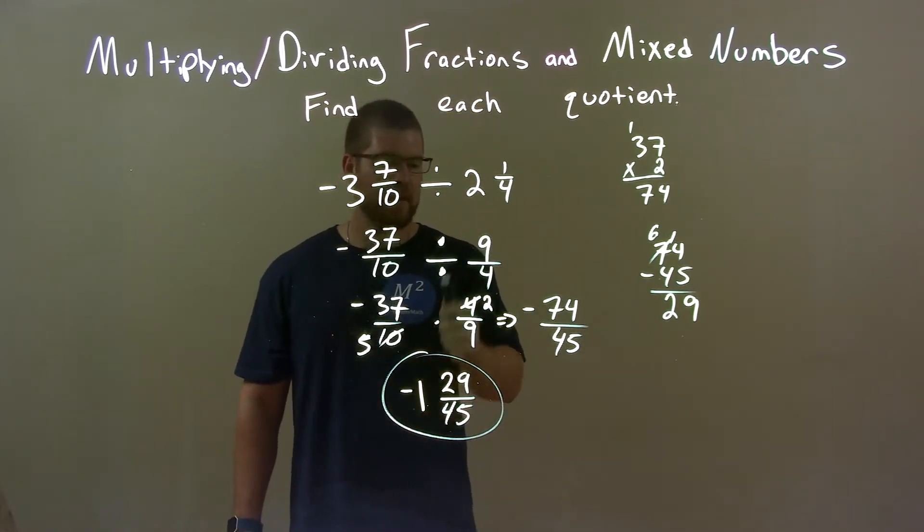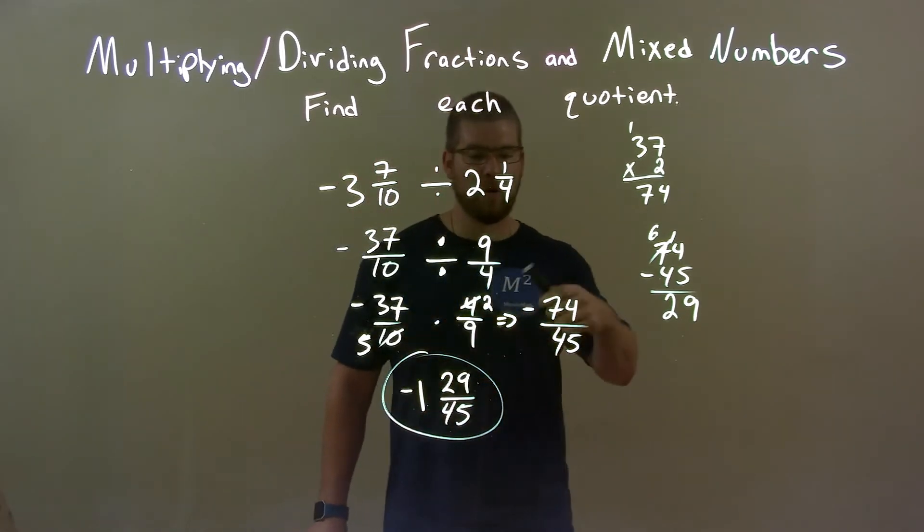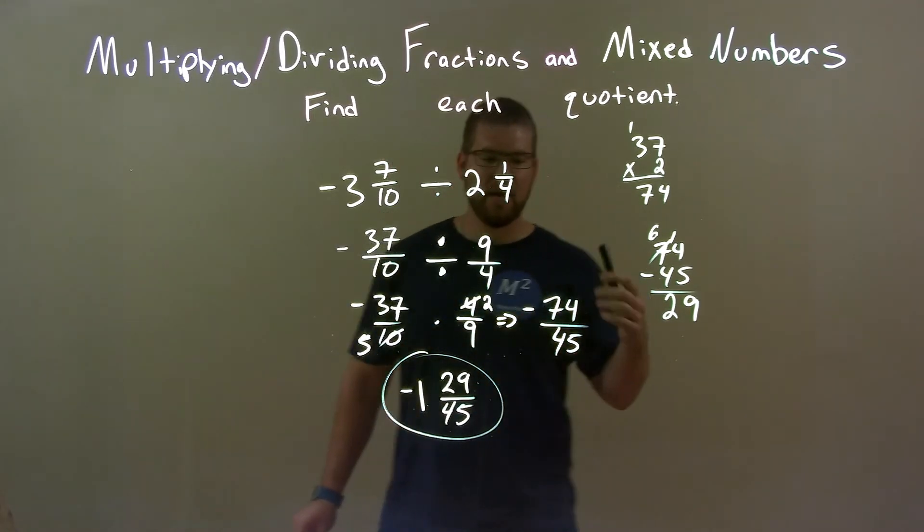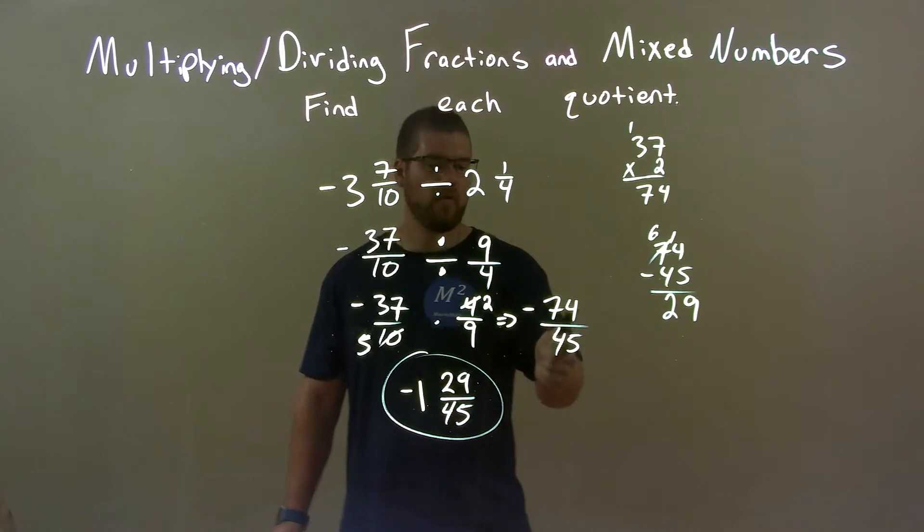So negative 37 over 10 times 4 over 9. Simplified that, then multiplied across the numerator and multiplied across the denominator. Then I got negative 74 over 45, which I then converted to be a proper fraction.